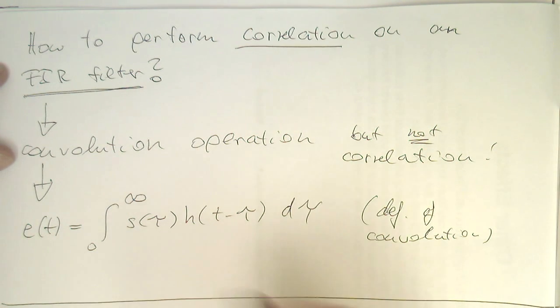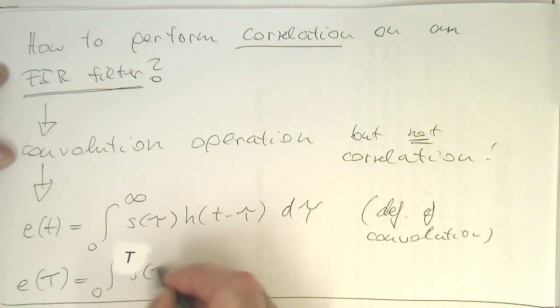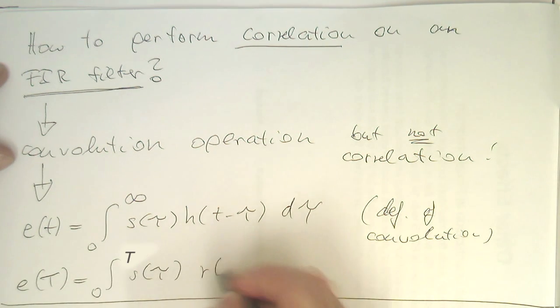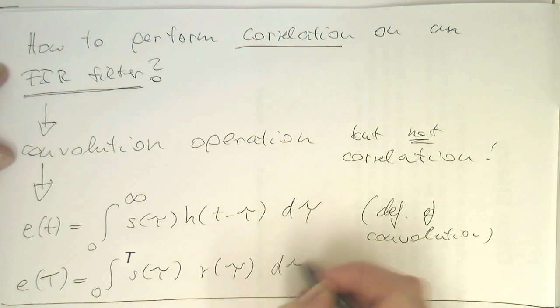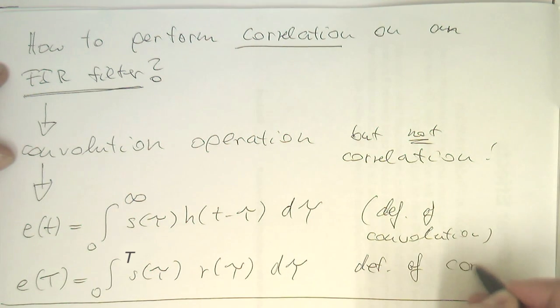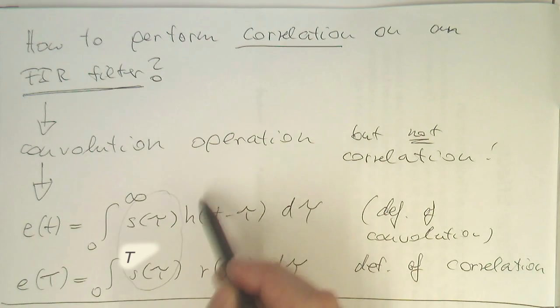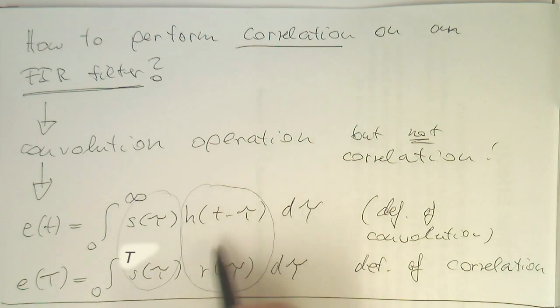So, now, what is correlation? The correlation, if we define this here, is s of tau and r of tau d tau. So, that's the definition of correlation. So, now we see the similarities but also what we need to fix. They are identical here and then we've got these two terms here. This means in the convolution the integration is running backwards whereas in the correlation it's running forward.